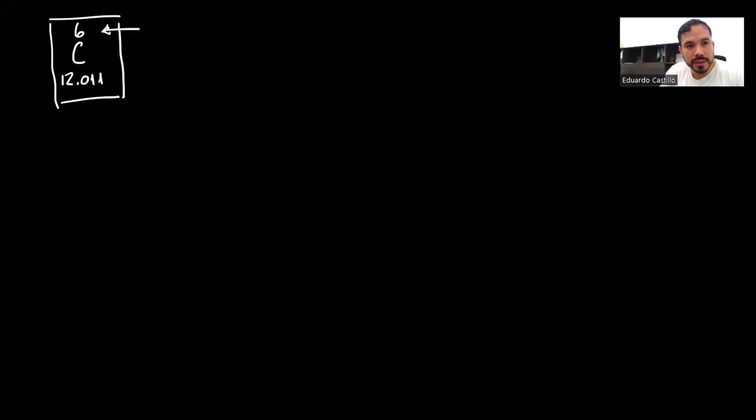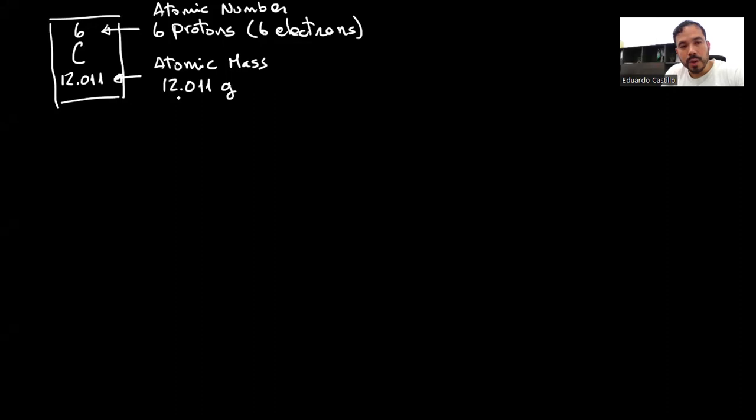We already know that this is my atomic number, and this means that I have 6 protons and 6 electrons. And this will be my atomic mass. The atomic mass is 12.011 grams.